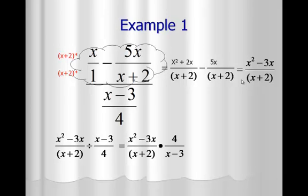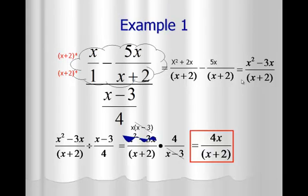In the top left corner, x squared minus 3x has a greatest common factor of x, so factoring that out gives us x times (x minus 3). Now we look for things that cancel: x minus 3 in the top left and x minus 3 in the bottom right cancel. This leaves 4x on top and x plus 2 on the bottom. The final answer is 4x over x plus 2 — nothing more can be simplified.